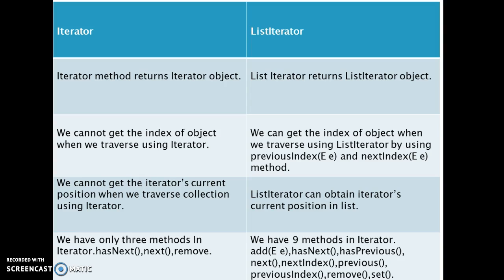Next, we cannot get the index of the object when we traverse using iterator. But using list iterator we have methods like previousIndex() and nextIndex() which can return the index of the object. So we can get the index of the object when we iterate through the collection using list iterator.